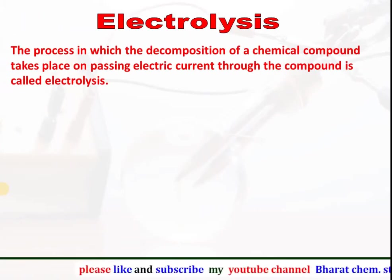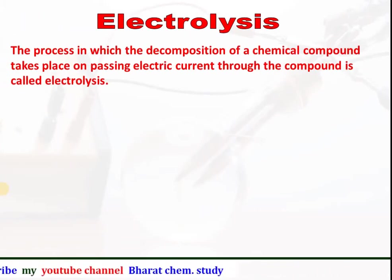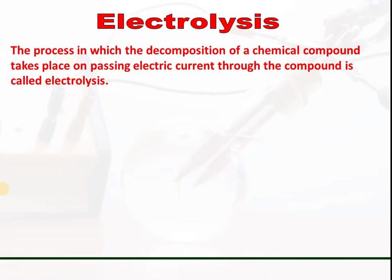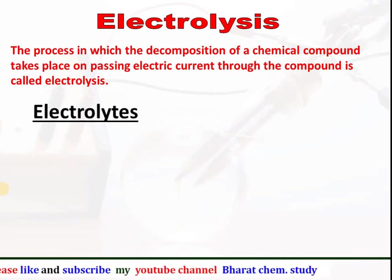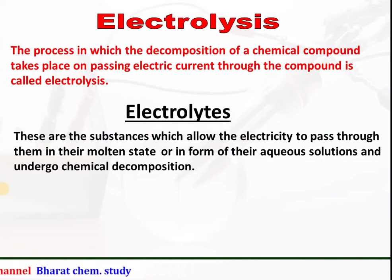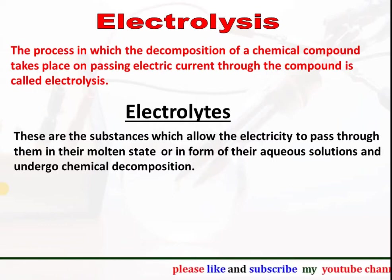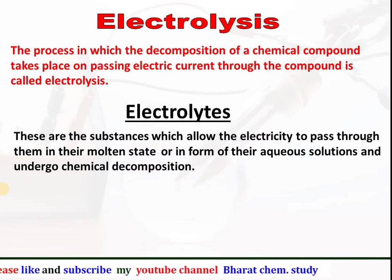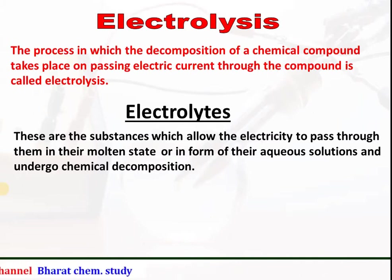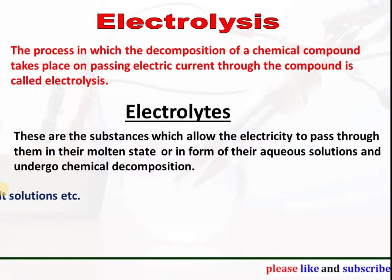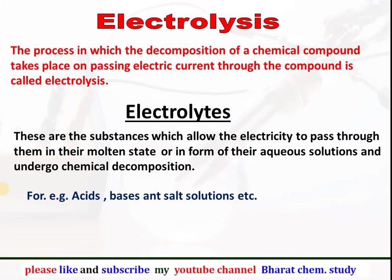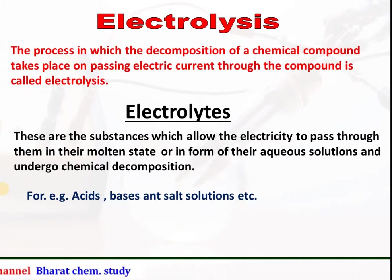Electrolysis: the process in which the decomposition of a chemical compound takes place on passing electric current through the compound is called electrolysis. Electrolytes: the substances which allow electricity to pass through them either in their molten state or in their aqueous solution form and undergo chemical decomposition are called electrolytes. For example, acids, bases and salt solutions are electrolytes.